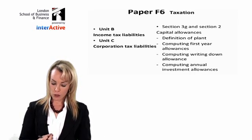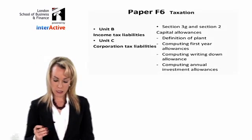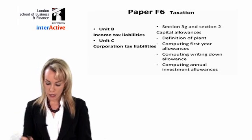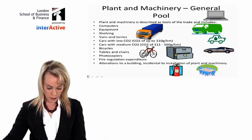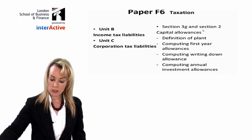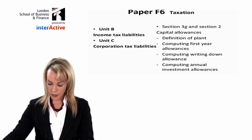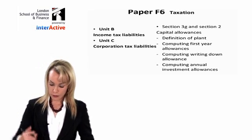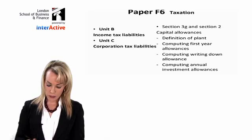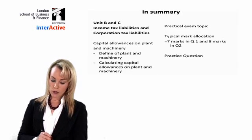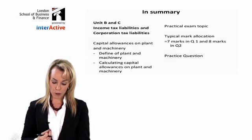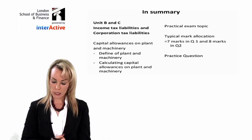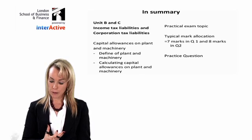I chose from unit B and unit C: income tax liabilities and corporation tax liabilities. In the income tax liability unit it was under section 3G, and under the corporation tax unit it was section 2. In summary, we looked at the definition of plant and machinery, talked about all the different allowances and how to calculate them, and practiced an example to illustrate how these things are brought together.